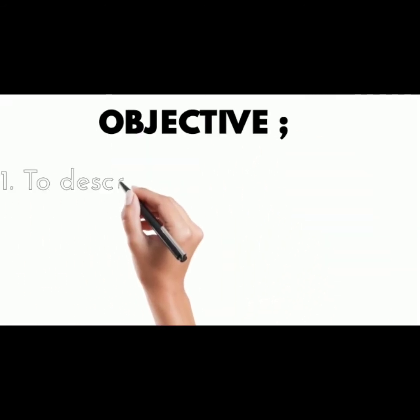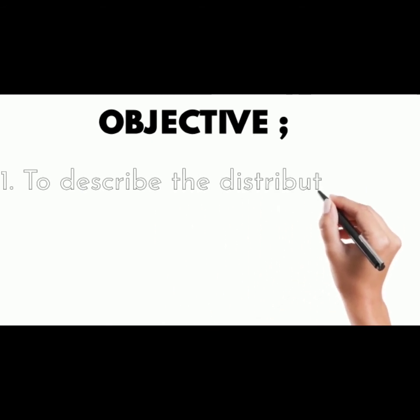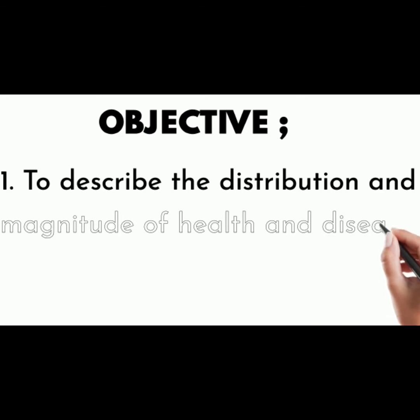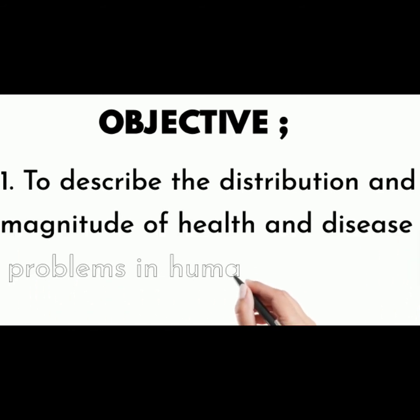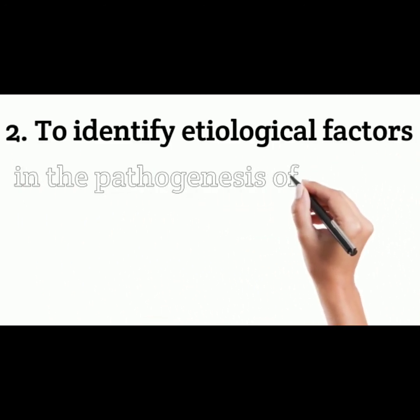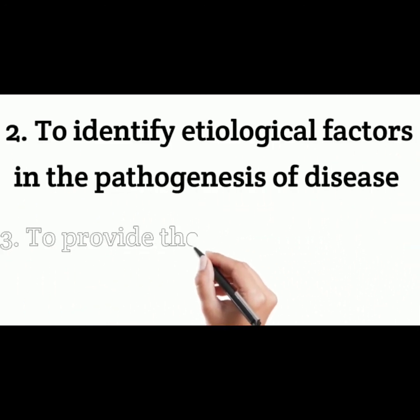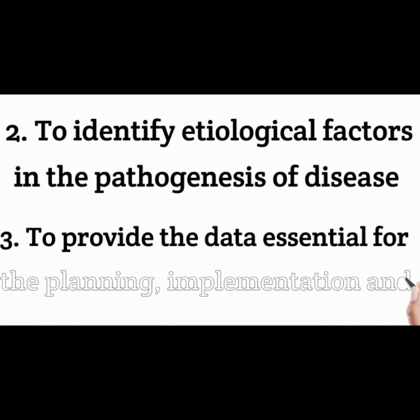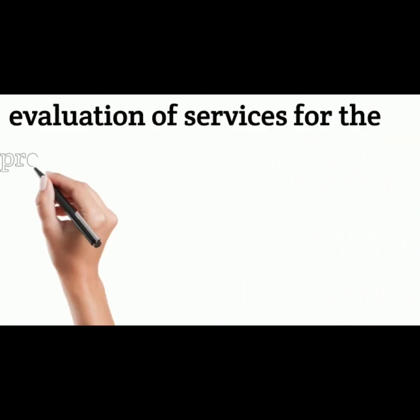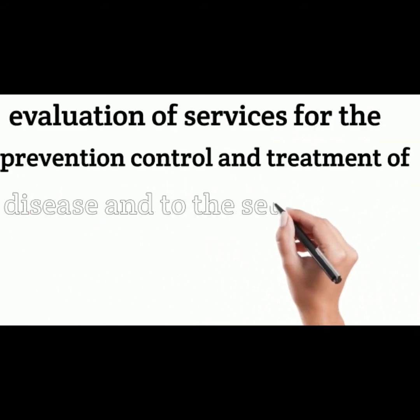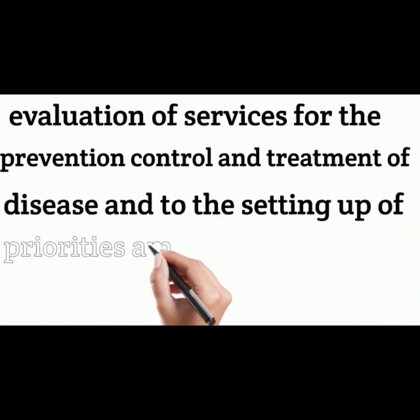Next comes to the objectives. First is to describe the distribution and the magnitude of health and disease problems in human population. Second is to identify etiological factors in the pathogenesis of disease. Third is to provide the data essential for the planning, implementation and evaluation of services for the prevention, control and treatment of disease and to the setting up of priorities among those services.